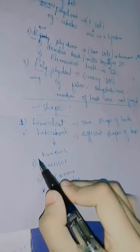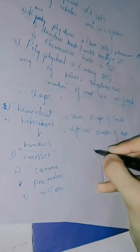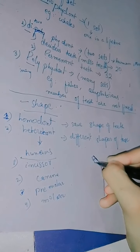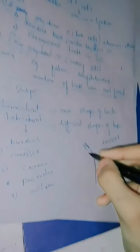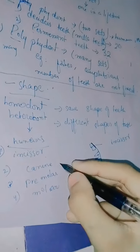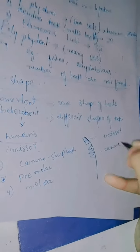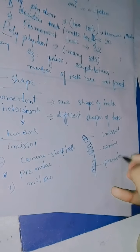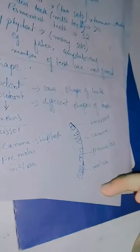The teeth that are visible at the front are known as incisors. They have a different amount, different shape, and different size. After the incisors we have canines, which are the sharp teeth. Then we have premolars, and at the last we have molar teeth. So there are four different shapes of teeth.